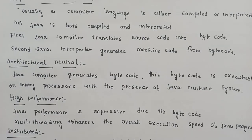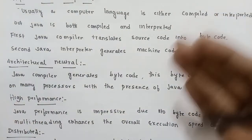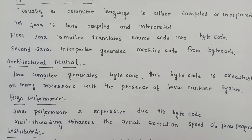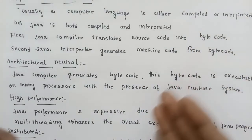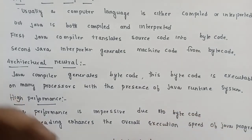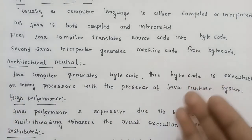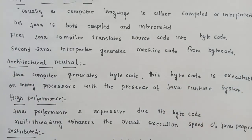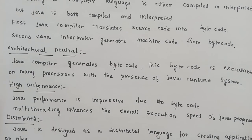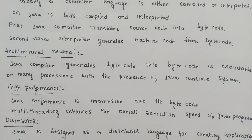Next is architecture neutral. Architecture neutral means it is not tied to a particular architecture. Because the Java compiler produces bytecode, the bytecode is the same across system architectures. Next is high performance. Java has a very easy result and is fastly executed. Java performance is impressive due to its bytecode.